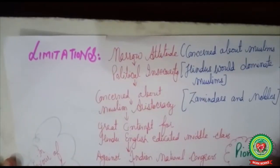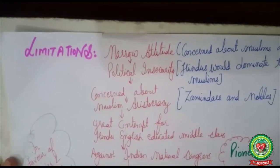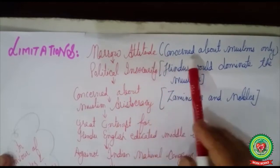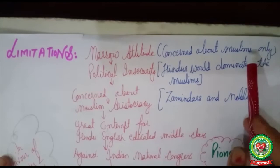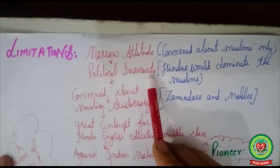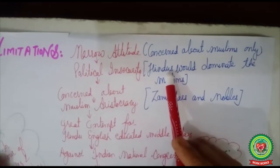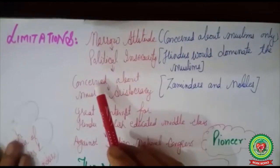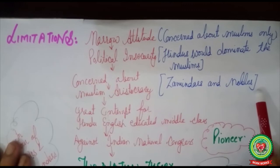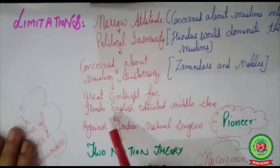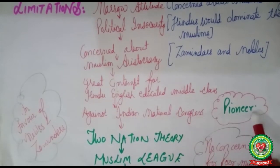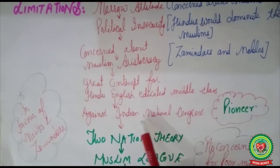Although Sir Syed Ahmed Khan asked Muslims to take Western education and promoted some reforms, there were notable drawbacks to his contribution. His attitude was narrow — he was concerned only about the Muslim community, not about India as a whole. There was also a sense of political insecurity when he propagated Western education, fearing Hindu dominance over Muslims. He was only concerned about Muslim aristocracy — zamindars and nobles — and did not care about poor Muslim people. He held great contempt for the Hindu English-educated middle class and also disliked the Indian National Congress, expressing these views in his journal Pioneer.